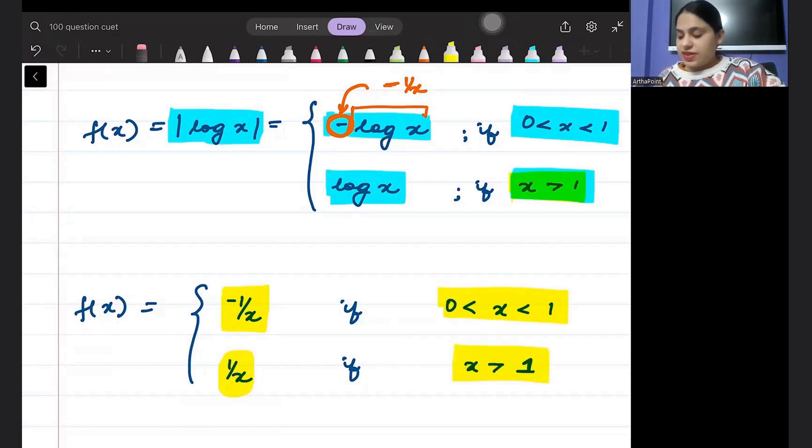I will get 1/x if x is greater than 1. So the value of f'(x) depends on whether x is between 0 and 1 or greater than 1. Is it between 0 and 1 or is it greater than 1? On that we will go ahead and find f'(x). Clear?